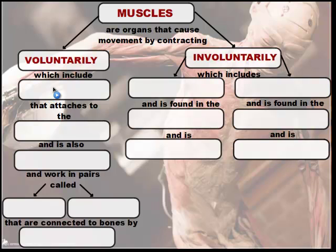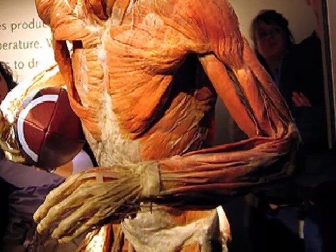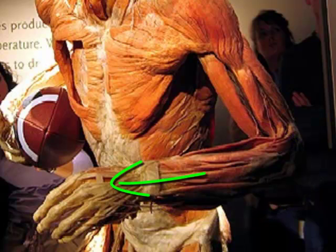Our voluntary muscles include one of the major muscle groups called the skeletal muscles. Skeletal muscles are easy to remember because they attach to the skeleton. If you take a look at this image here — from the Body's Exhibit that you can see in Manhattan — if we zoom in on the forearm, the red tissue here are the forearm muscles. Following them toward the hands, you'll notice they turn into white, thin, stringy tissue that connects to the bone.